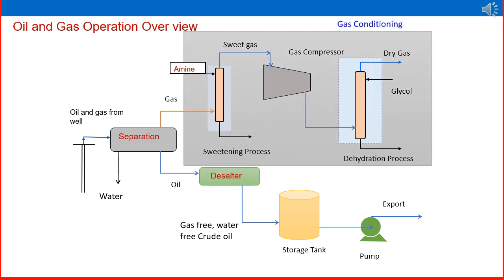Oil and gas operation overview. The crude oil mixture — oil, gas, and water — coming from the subsurface well is first introduced to a three-phase separator. The separator is a pressure vessel separating gas, water, and oil into three components. This is the first operation in an oil and gas separation processing plant.